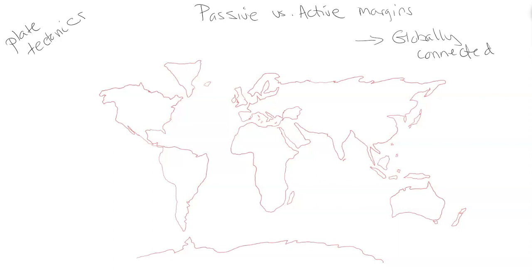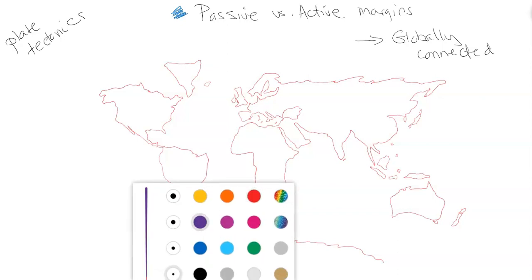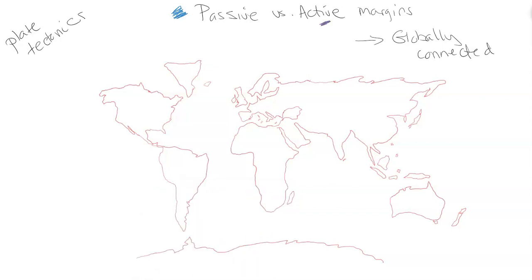Hi everyone, welcome to the Earth Science classroom. This is a video on passive and active margins. It accompanies another video covering some content and differences, but this one is basically just showing you a hand-drawn outline of the Earth and the global distribution of where passive and active margins are. Let's use blue for passive and purple for active — there's our key.